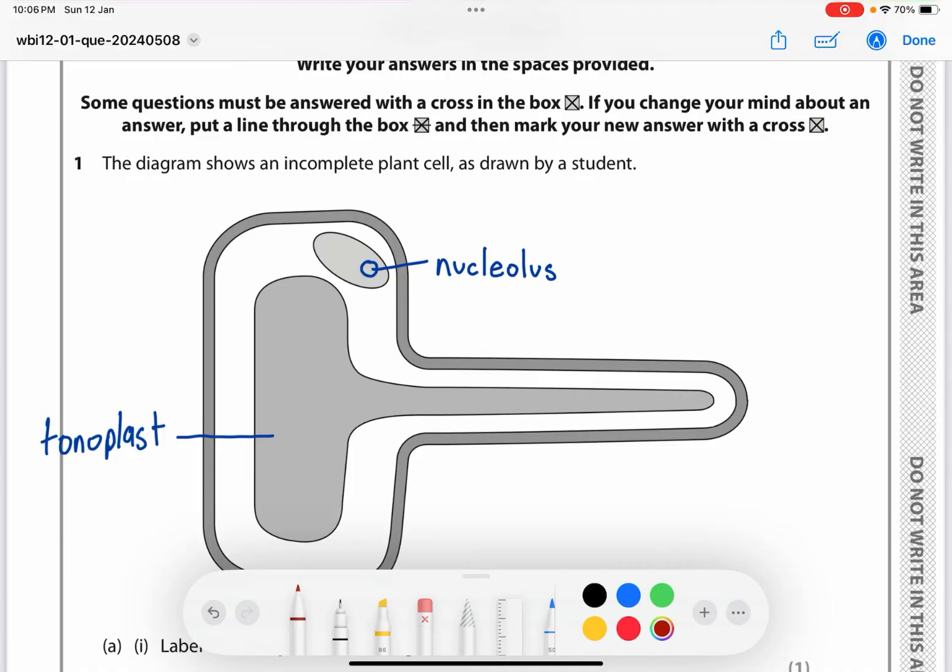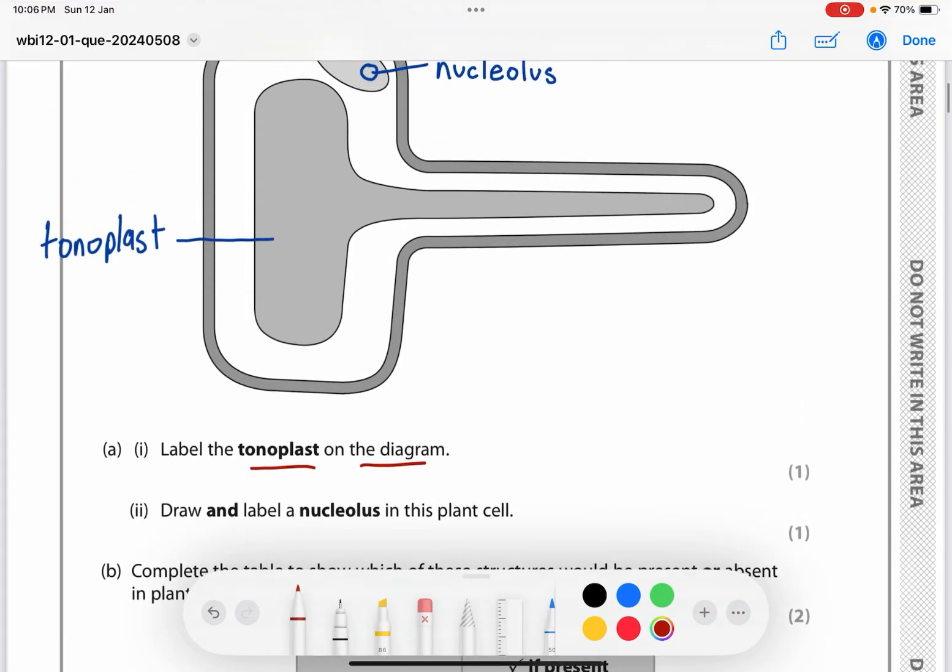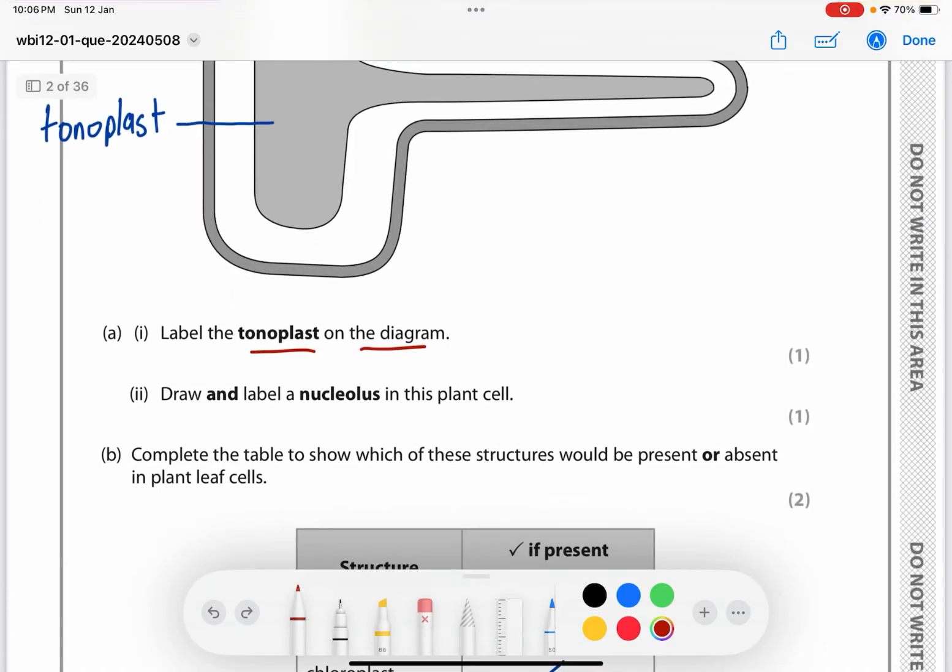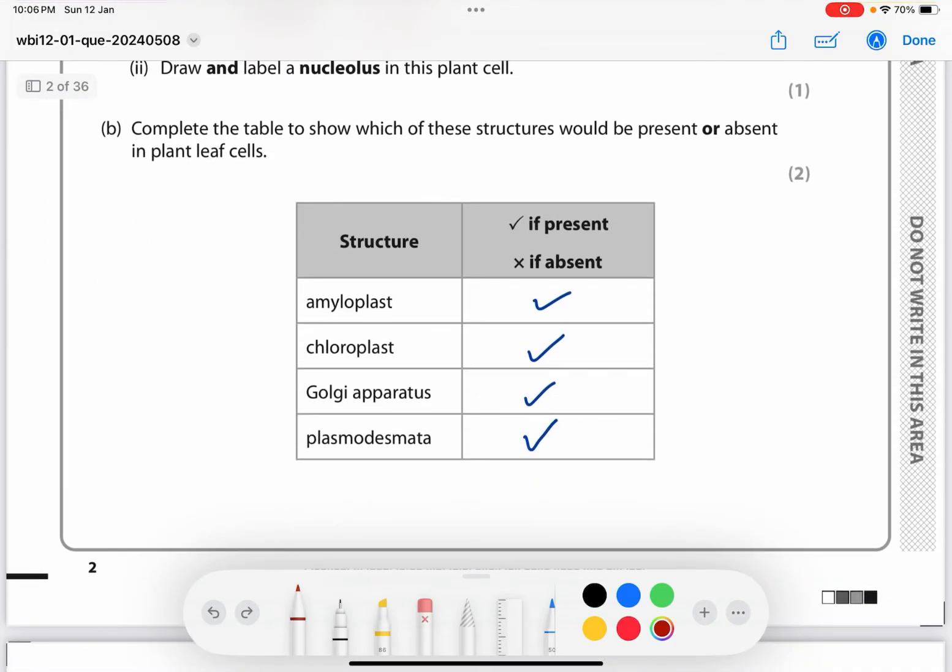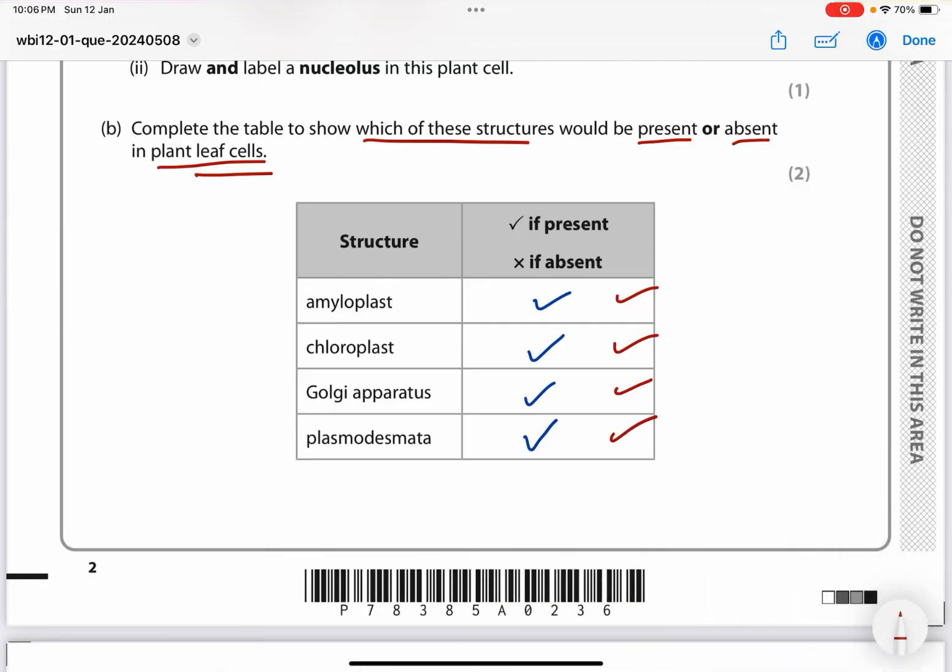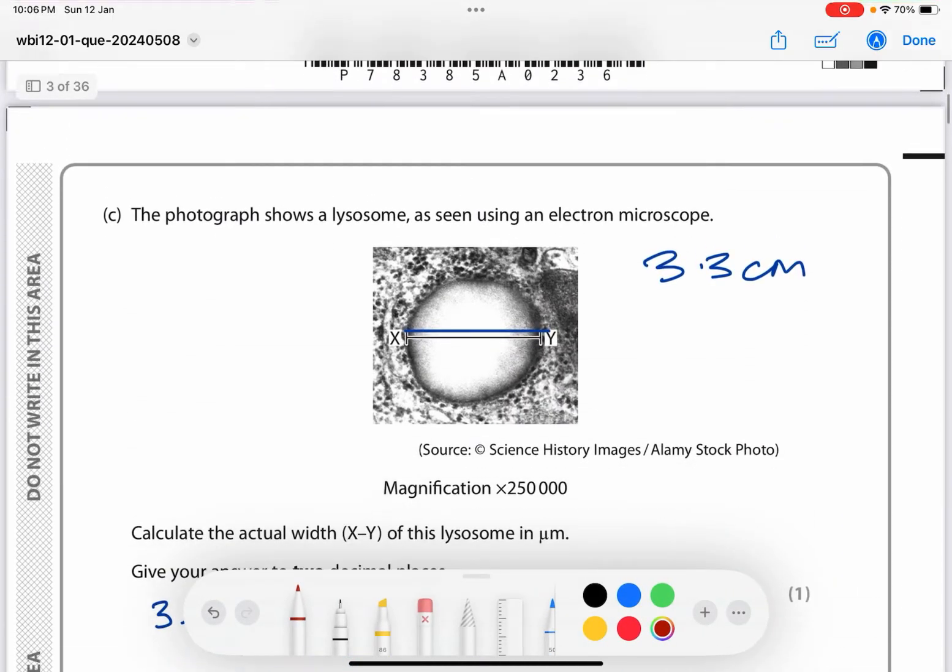Question one: the diagram shows an incomplete plant cell. It says label the tonoplast on the diagram. This over here is the tonoplast and I have labeled it. Second part asks us to draw and label a nucleolus in the plant cell. This is the nucleus and this is the nucleolus. Complete the table to show which structures would be present in plant leaf cells. We know that plant leaf cells contain amyloplast, chloroplast, Golgi apparatus, and plasmodesmata, so they're all going to be ticked.